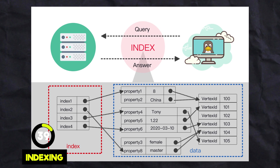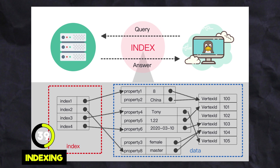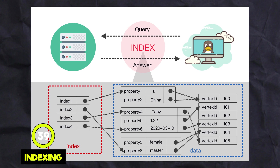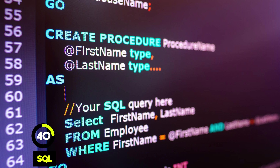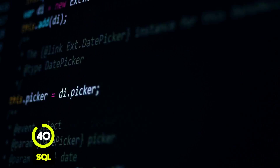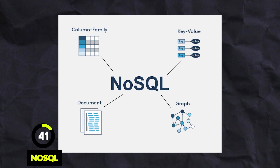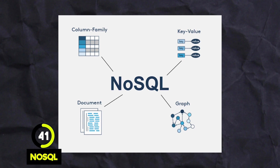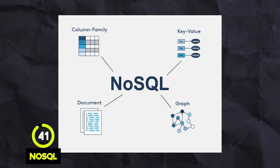Indexing allows you to use an index to speed up data operations in your database — it makes searching for data much faster. SQL stands for Structured Query Language and is a programming language used to work with databases. You describe what you want and SQL does it for you. NoSQL is a type of database that can handle lots of different types of data, not just neatly organized tables, making it great for working with less structured data.